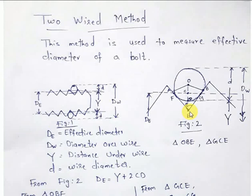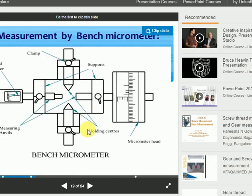Hello students. Today in this video we'll learn about the two-wire method. The two-wire method is used to measure the effective diameter of a bolt, and it is used when a floating carriage micrometer is available. I'll show you what a floating carriage micrometer looks like on this screen.